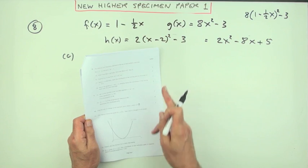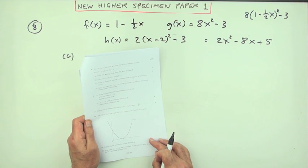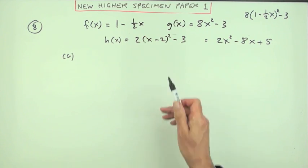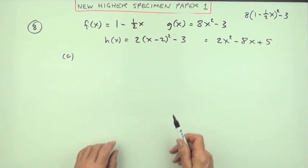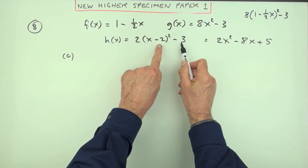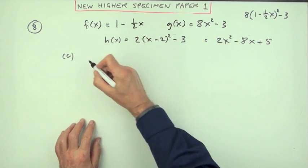Now part c for one mark: hence or otherwise, state the coordinates of the turning point on the graph of this. Well, there I've got h(x) in the two forms—the expanded form, the completed squared form. That's a handy one for the turning point because there's the turning point there. The turning point must be—let's call it tp—well, the value of the function, which is the y-coordinate.